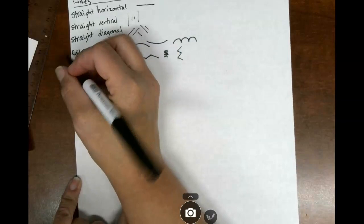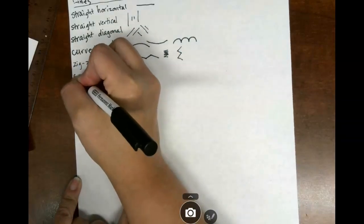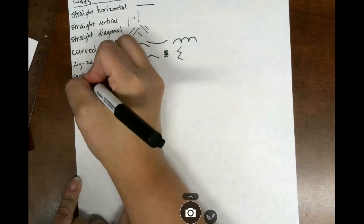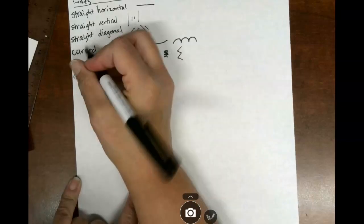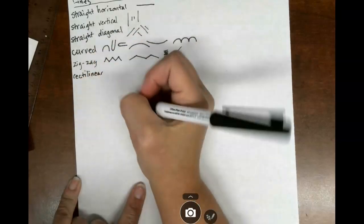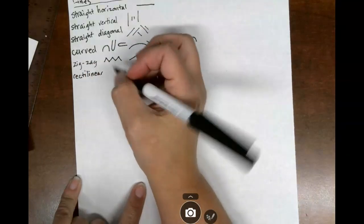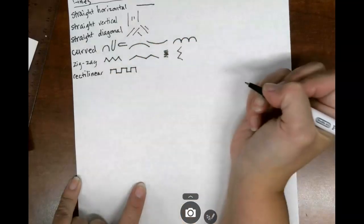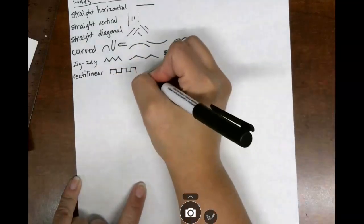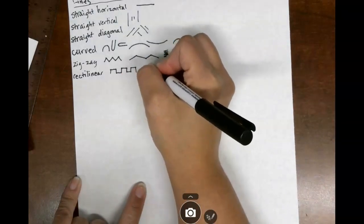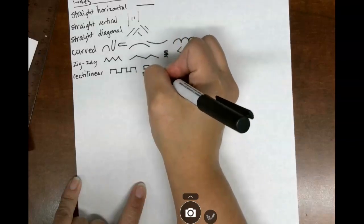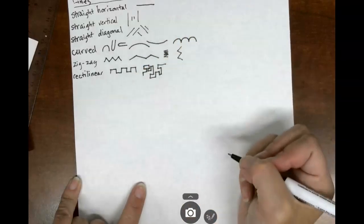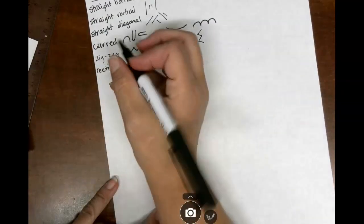All right, now this one's kind of fun. This one's got a special name. It's called rectilinear, R-E-C-T-I-L-I-N-E-A-R. This means it's made up of all right angles. So this is how you get your castle tops. Any kind of line that has a right angle is going to be called rectilinear. Note I got a little crazy there so it's not all perfect, but that is it.